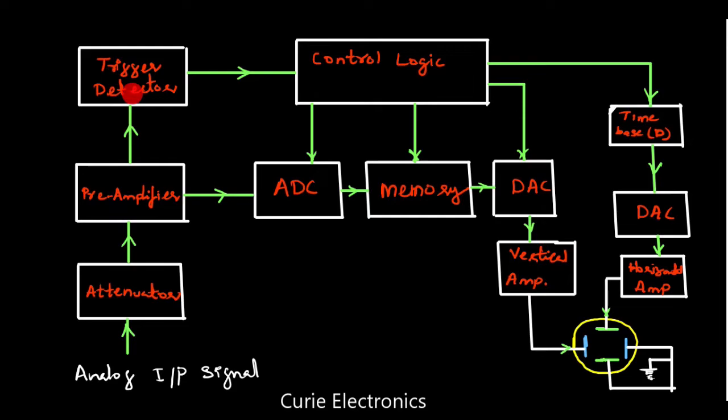Once the trigger circuit detects the trigger, it will start the sweep — just like in the CRO, this is the horizontal time base signal. From the pre-amplifier there is an ADC. Now we are going into the vertical section.